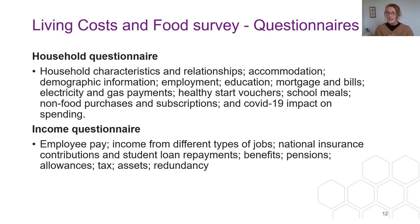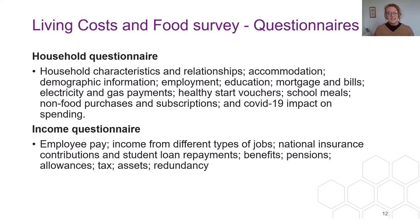Here are some more of the topics covered in the Living Costs and Food Survey questionnaire — they're quite extensive. We have information on household characteristics, relationships between those in the household, accommodation, demographic information, employment, education, mortgage and bills information, electricity and gas payments — obviously relevant with the current cost of living and rising energy prices — whether the household is in receipt of healthy start vouchers or free school meals, any non-food purchases, and the impact of COVID-19 on various aspects of spending. The individual questionnaire is much more income focused: employment, where the income comes from, different types of jobs, how much tax is being paid, student loan repayments, and benefits and pensions.